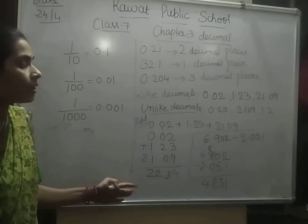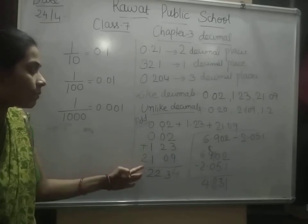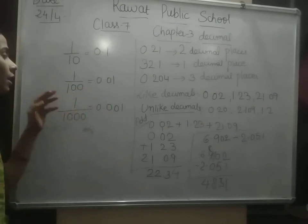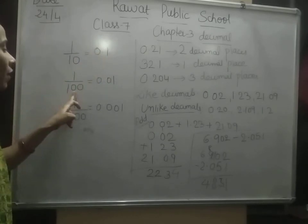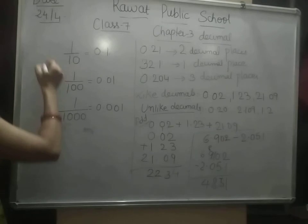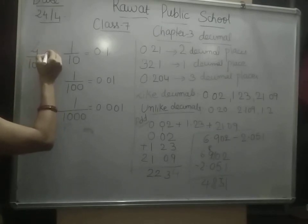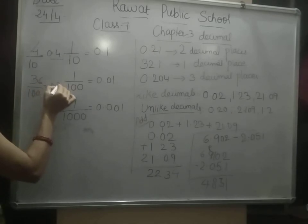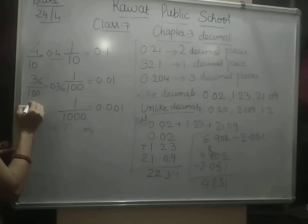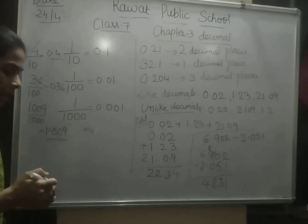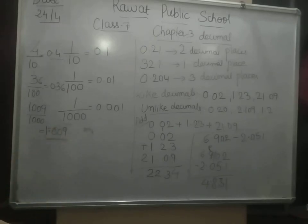So in this way you have to put the decimals — you can add numbers which have the same decimal places, and subtract also with the same decimal places. To review: 1/10 is 0.1, 1/100 is 0.01, 1/1000 is 0.001. In the same way, 4/10 is 0.4, 36/100 is 0.36, and 1009/1000 is 1.009. In this way we have to place the decimal in the number. Hopefully you have understood the basic concept and introduction of decimals, and we will continue with the exercise in the next class.